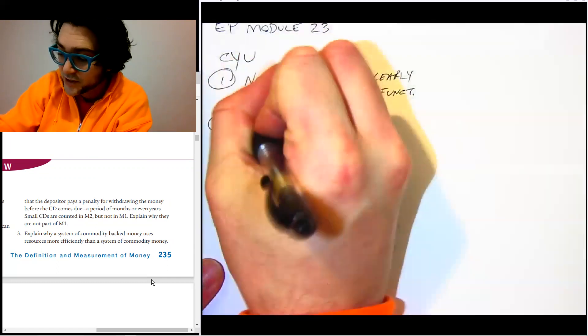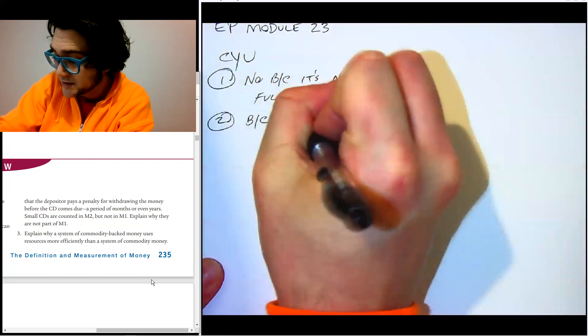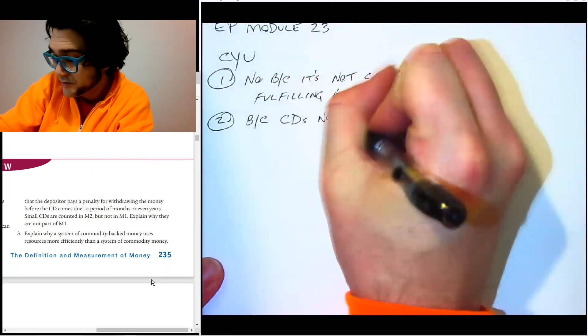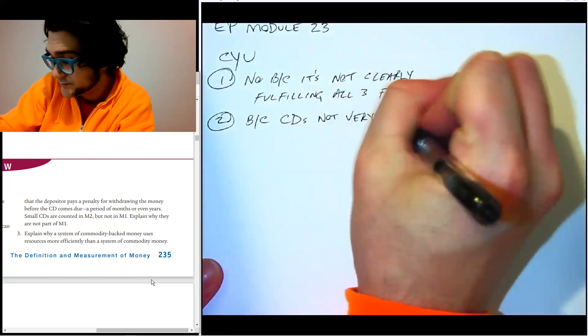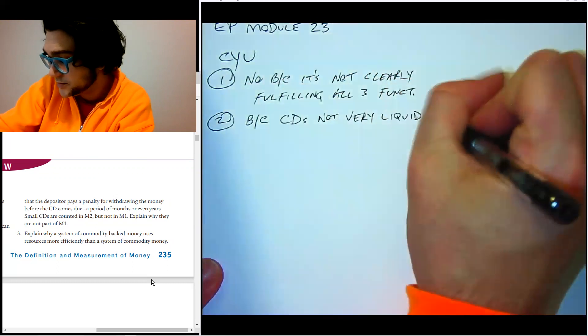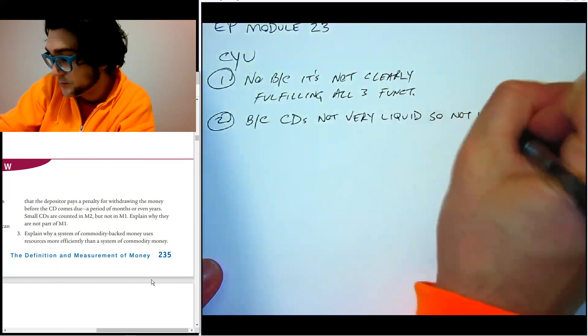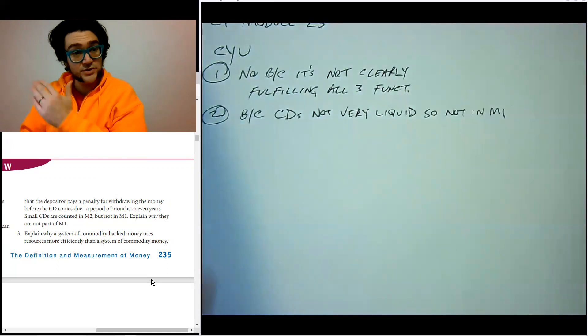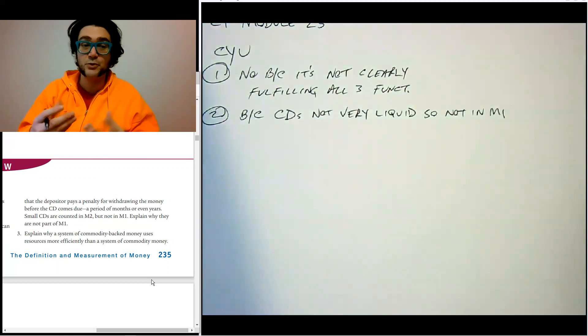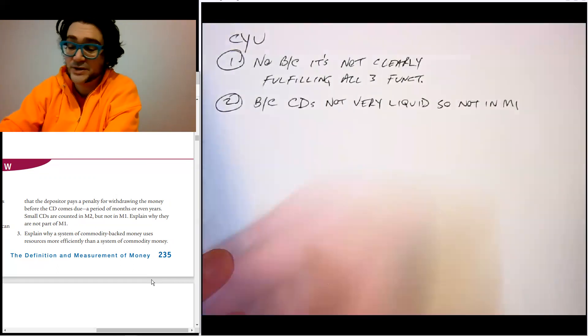Why are they not part of M1? And so we'd say, because CDs are not very liquid, so not in M1. M1 is only consisting of demand deposits, which are very, very liquid, and currency, which is the most liquid thing you can get. So they're not very liquid.